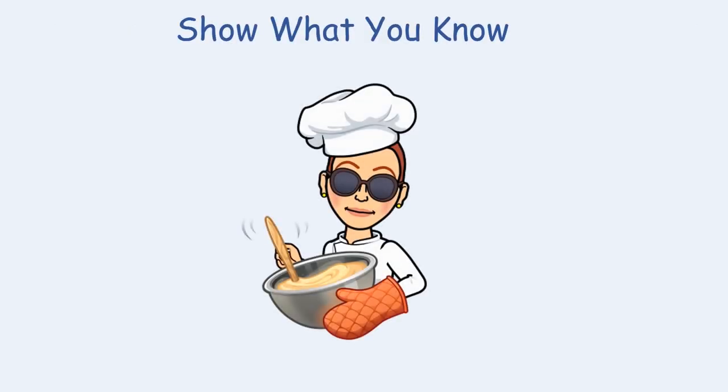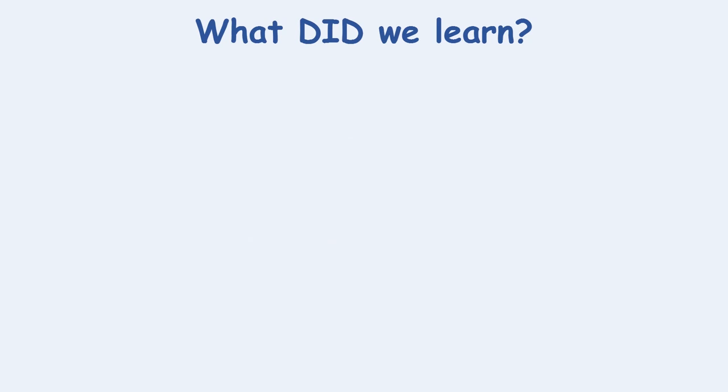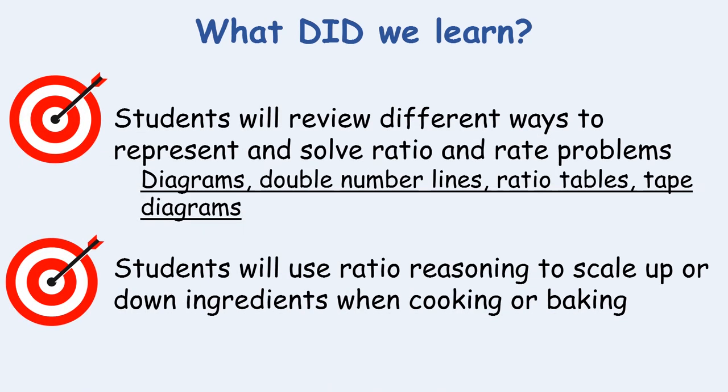Now it's your turn to show what you know about scaling up and scaling down in order to cook or bake the most delicious meal or dessert. Let's review what we learned today: we reviewed different ways to represent and solve ratio and rate problems — diagrams, double number lines, ratio tables, and tape diagrams. We also used ratio reasoning to scale up and down ingredients when cooking or baking. I think we met both of those objectives — what do you think?